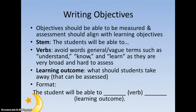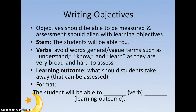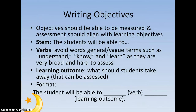When you write your learning objectives, they should be measurable with your assessment, and your assessment should align with your learning objectives. We're going to have a stem, a verb, and a learning outcome. The stem is typically 'the student will be able to,' then you insert some type of verb. Avoid general vague terms such as 'understand,' 'know,' and 'learn,' because they're too broad and very difficult to assess.